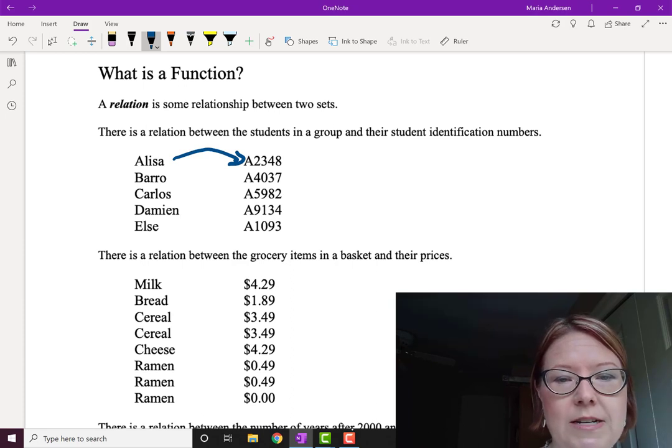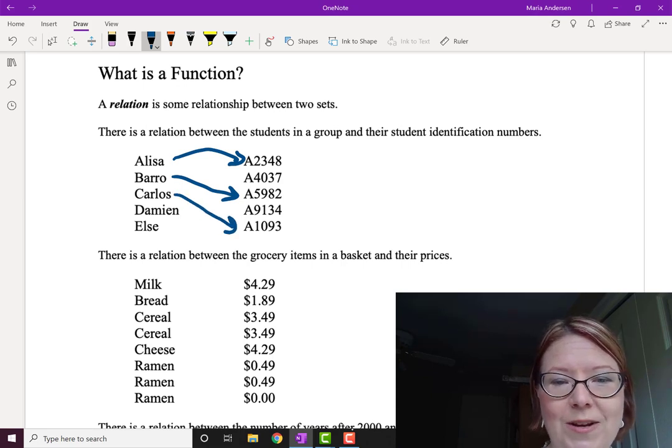We ask Barrow and he says, oh it's A5982, and Carlos tells us it's A1093, Damian tells us it's A4037, and Elsie tells us it's A9134.